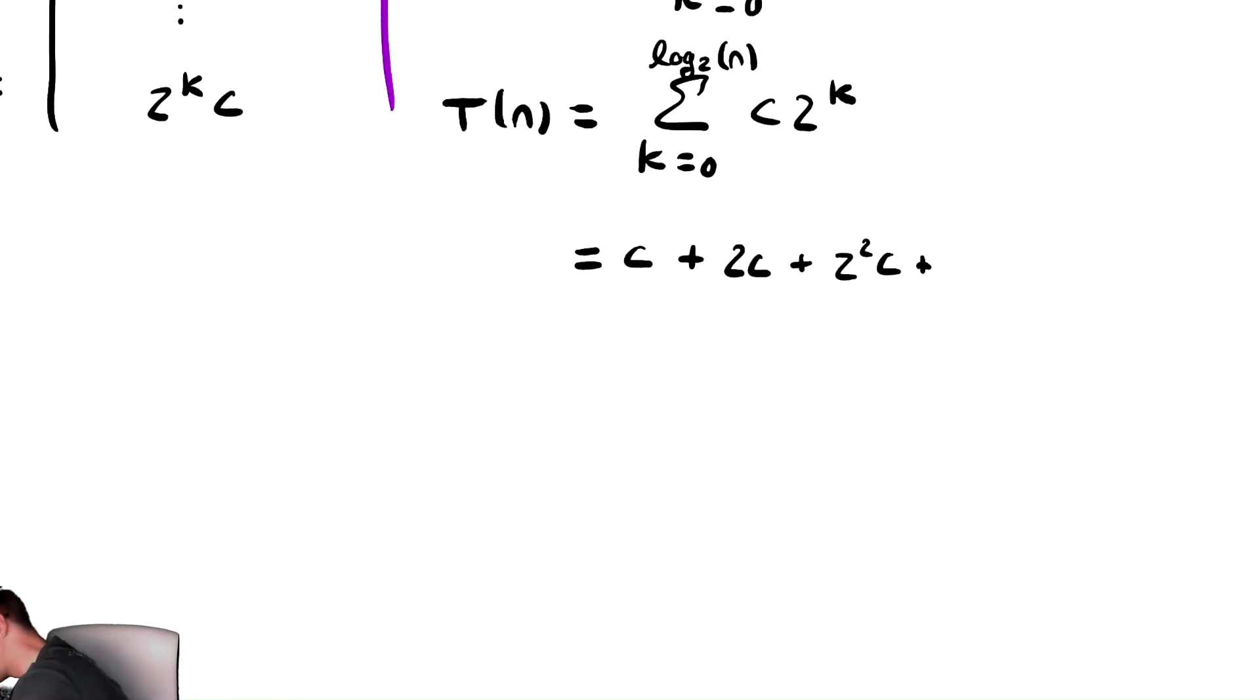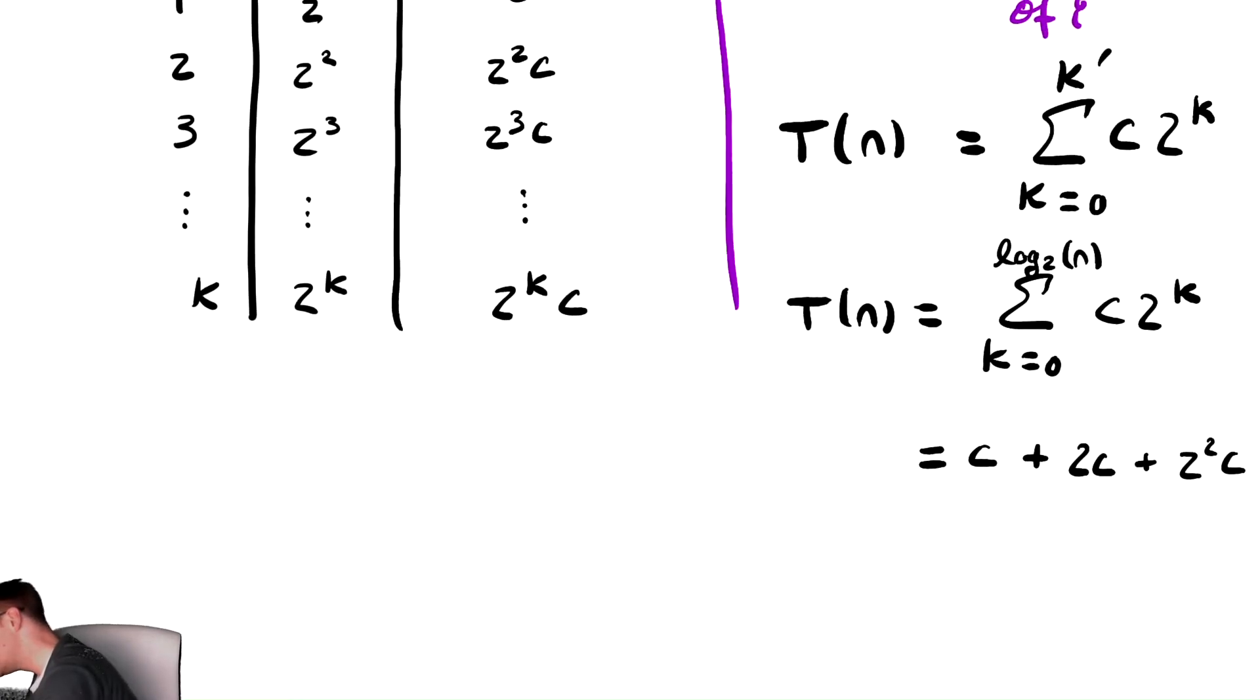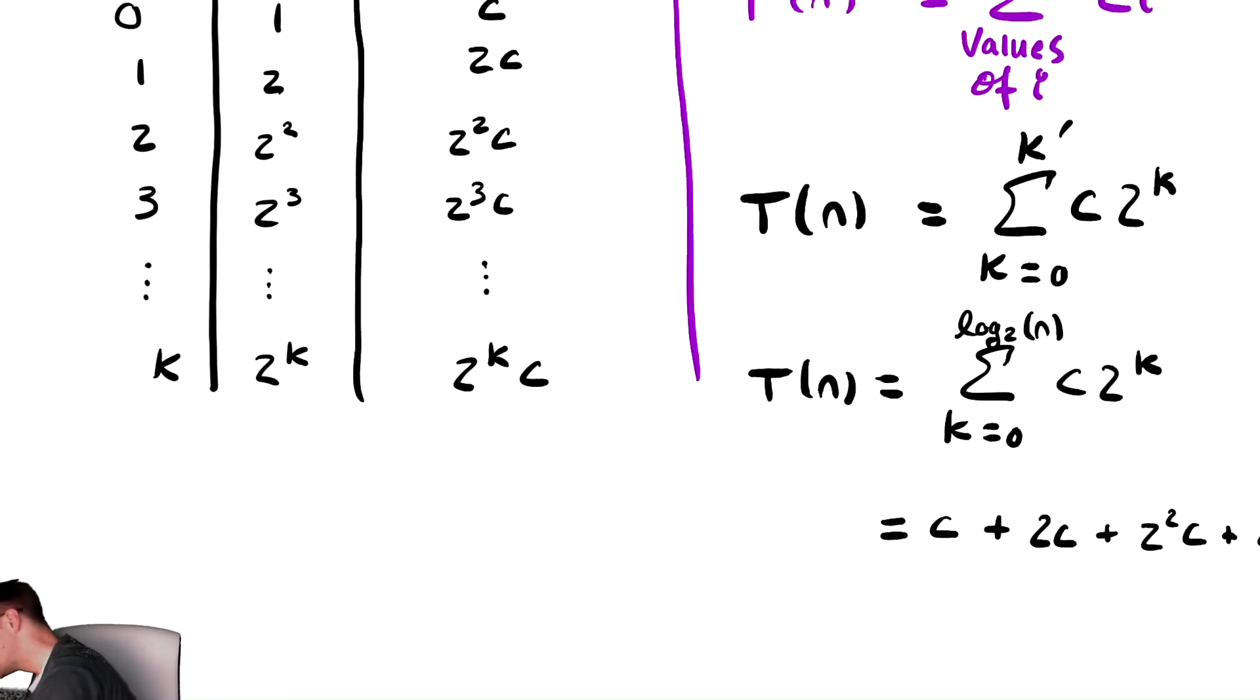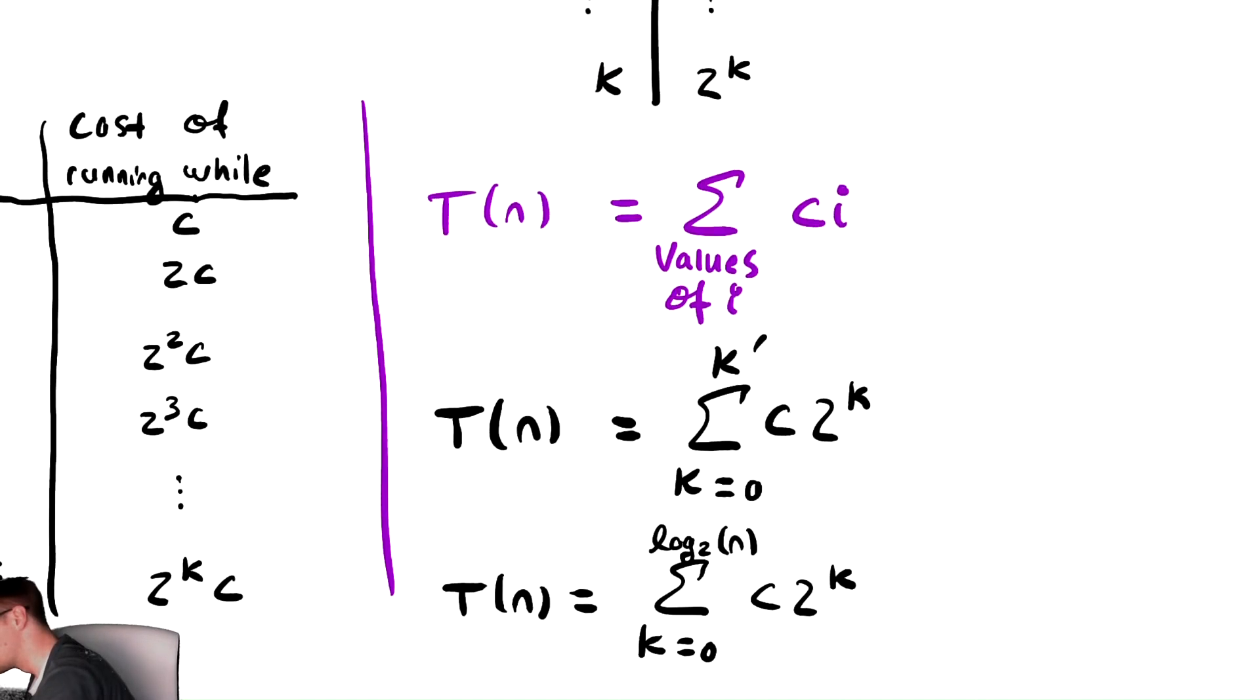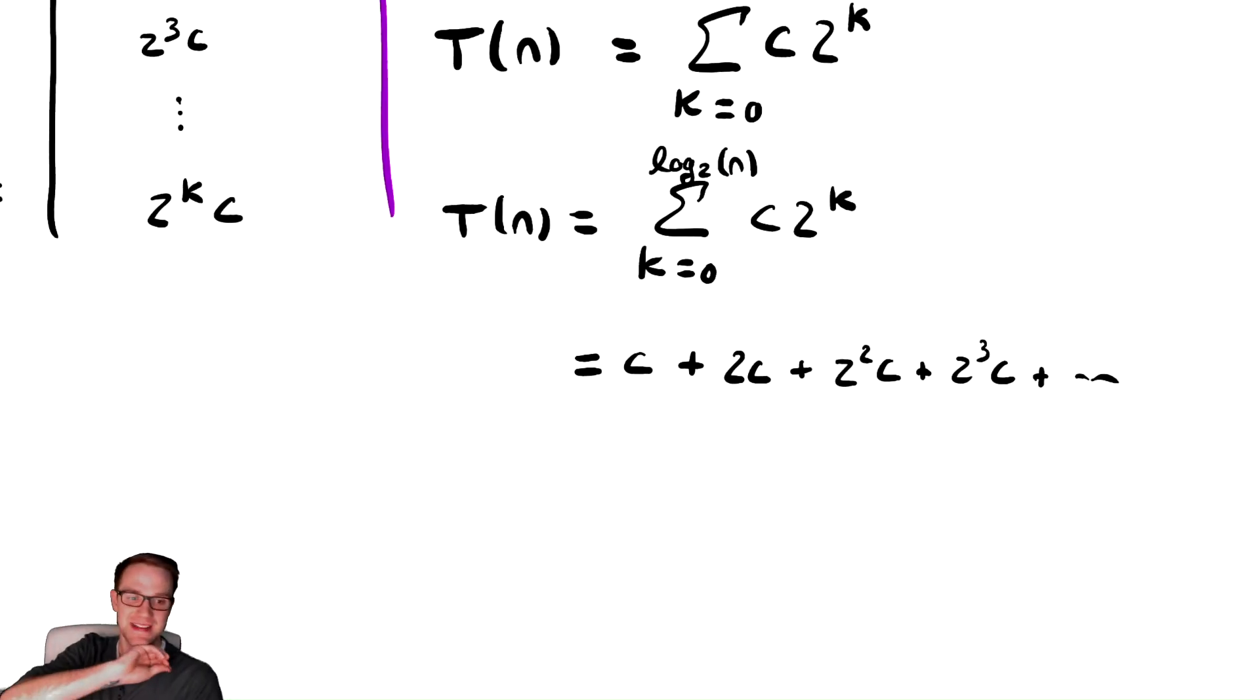Plus plug in k equals 3, that's 2 cubed c. And this keeps going until it stops at the final value of k, which is what we computed earlier. And that matches exactly with what we said before.